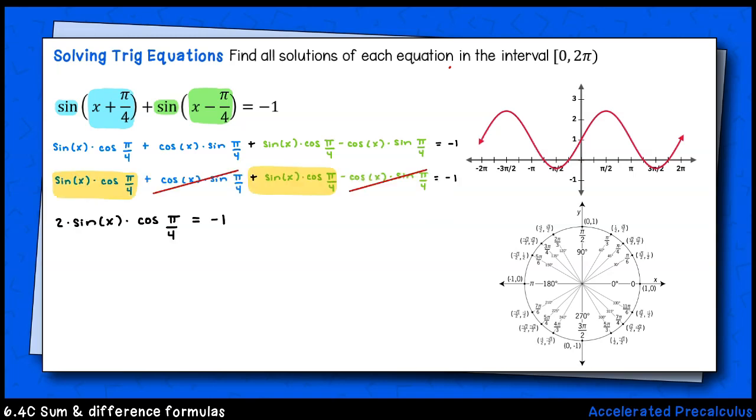Now I have two times sine of x times cosine of π over four equals negative one. I'll go ahead and reduce this two over two down to one. Now I'll divide both sides by root two, and I'll have sine of x equals negative root two over two after rationalizing the denominator.